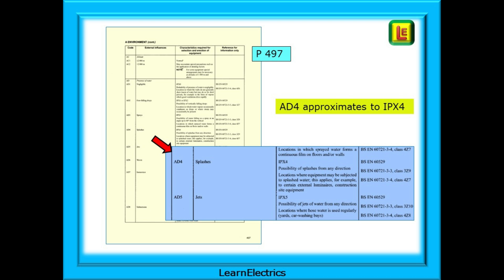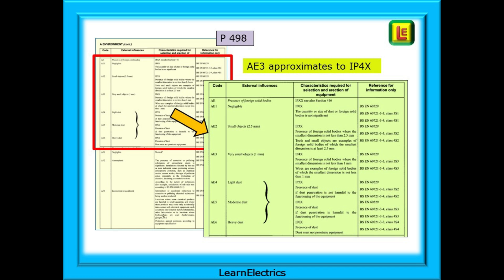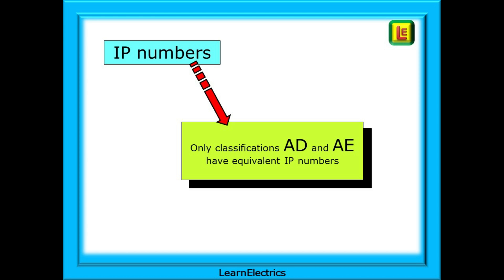Take a look at the page again. Turn over to page 498 and we have the AE category for foreign bodies, for solids. This time, AE 3 approximates to IP 4X for very small objects that are not less than 1 mm in diameter, perhaps a piece of wire. When using IP numbers, it is only external influence categories AD and AE that will have an equivalent IP number. Other influences, such as temperature or height above sea level, do not have an IP code — it's just for solids and liquids.